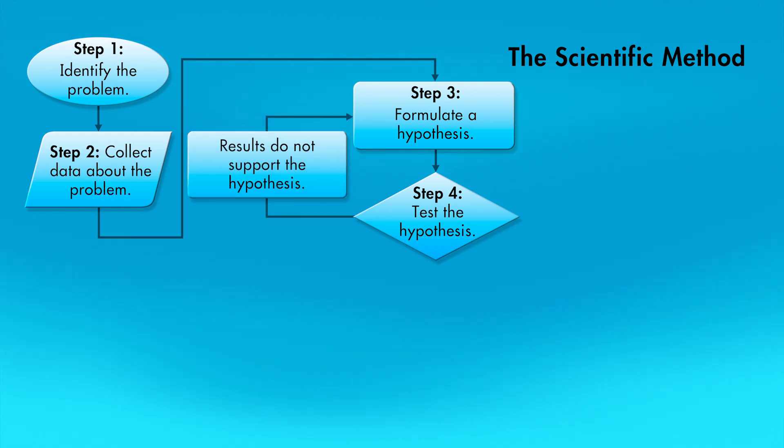If the tests we performed had not supported our hypothesis, we would return to step 3 of the scientific method. We would analyze our data again, conduct more experiments, and formulate a new hypothesis.